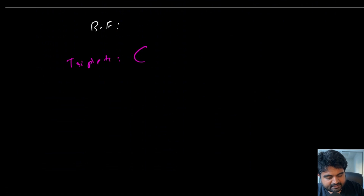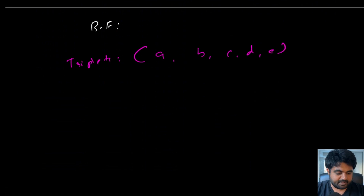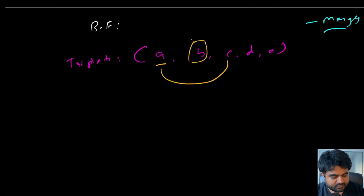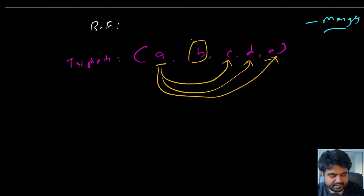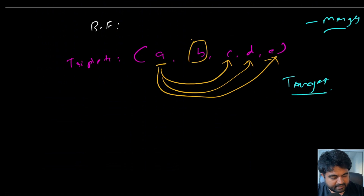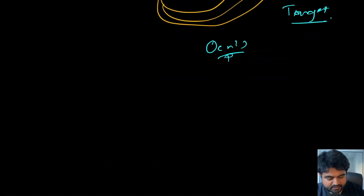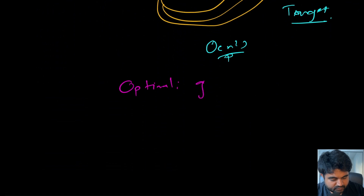What is the brute force approach? Suppose we have five triplets labeled a, b, c, d, and e. We do the merge operation among all pairs, repeatedly comparing results against the target to see if we can generate it. This approach is straightforward but yields O(n²) time complexity, where n is the number of triplets — an inefficient approach. We need a better solution, and the optimal one comes from a greedy approach.